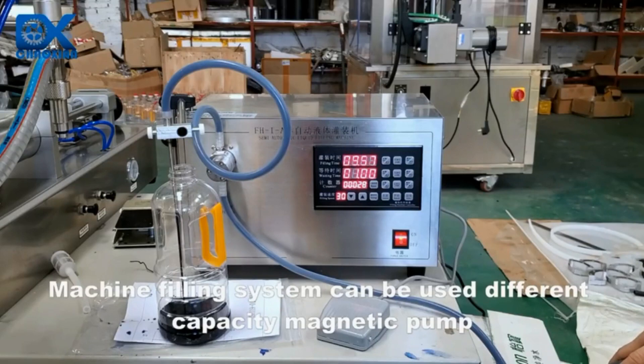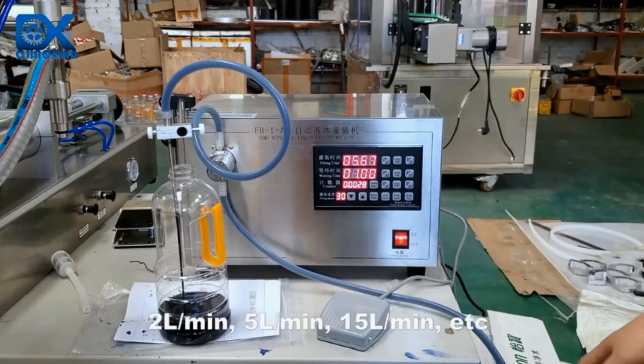Machine filling system can be used with different capacity magnetic pumps: 2 liters per minute, 5 liters per minute, 15 liters per minute, etc.